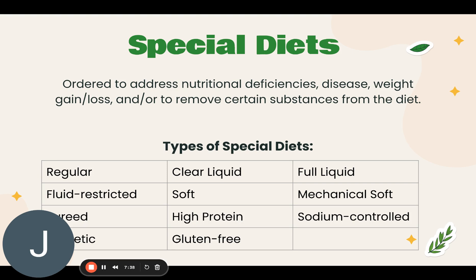Pureed foods have a smooth, uniform texture and hold their shape on a spoon — they are pudding-like. High-protein diets are ordered when an individual has wounds or pressure injuries that need to be healed. A sodium-controlled diet is ordered for patients with cardiac disease. With too much sodium, the body retains water and tissue swells, creating extra fluid in the blood vessels, which makes the heart work harder. A sodium-controlled diet lowers the amount of sodium in the body, preventing it from retaining as much water.